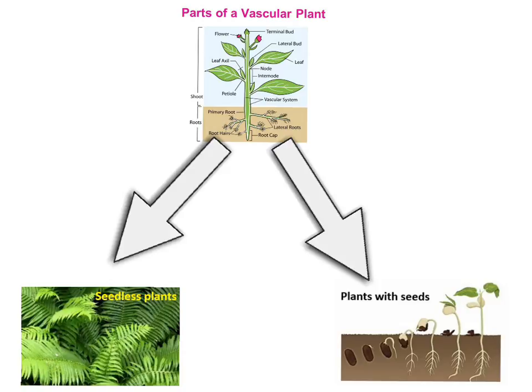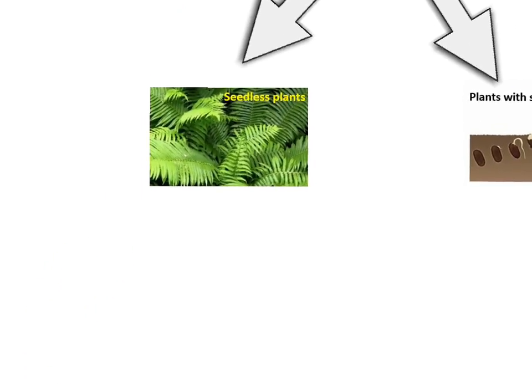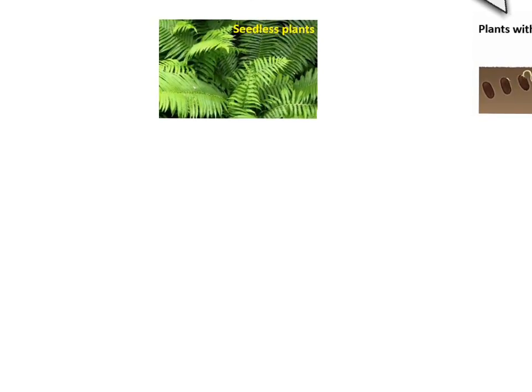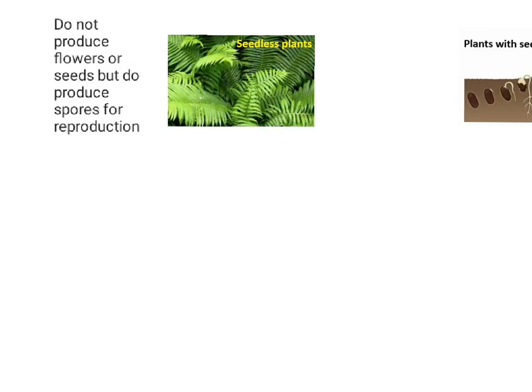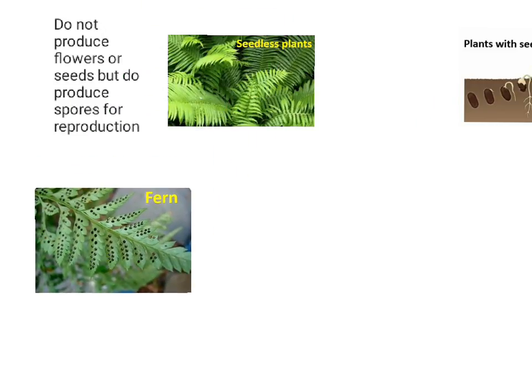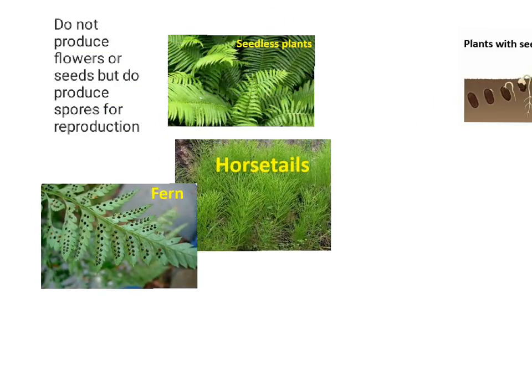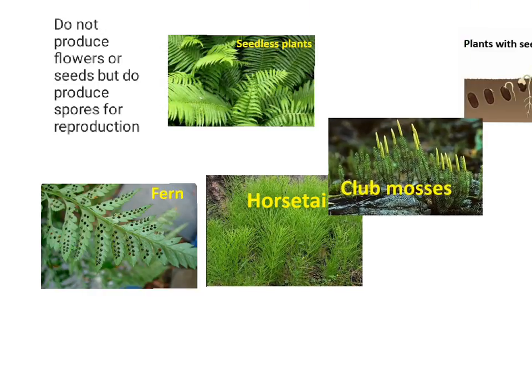Let's look specifically at seedless plants. Seedless plants do not reproduce by the use of seeds, and do not produce flowers. Instead of seeds, they produce spores. Spores are units of asexual reproduction, usually single-celled, and can be produced by non-flowering plants, some bacteria, fungi, and algae. Some examples of seedless plants are ferns, horsetails, and club mosses.